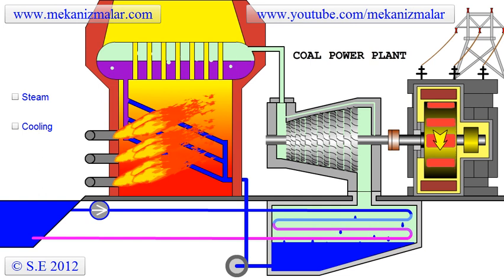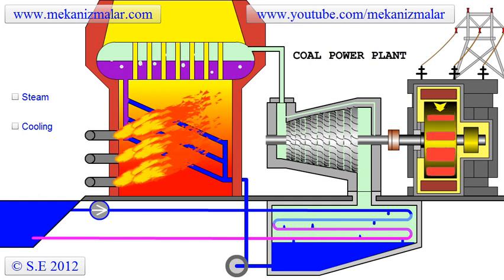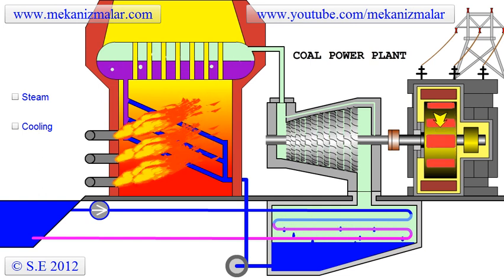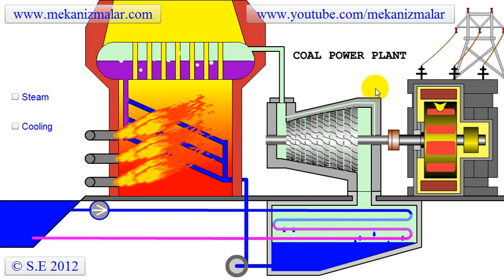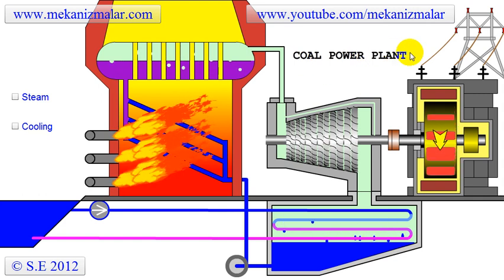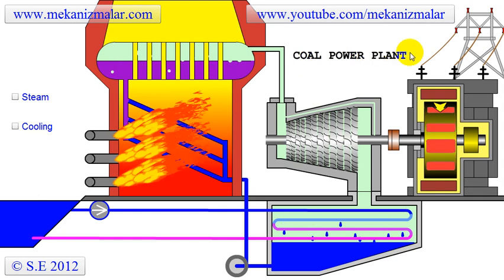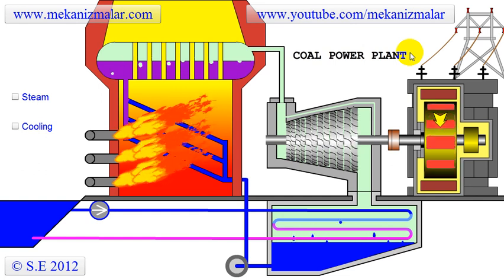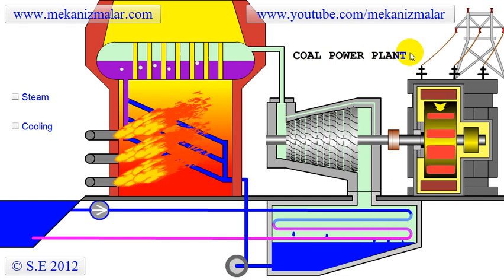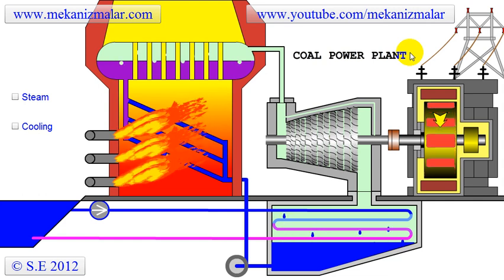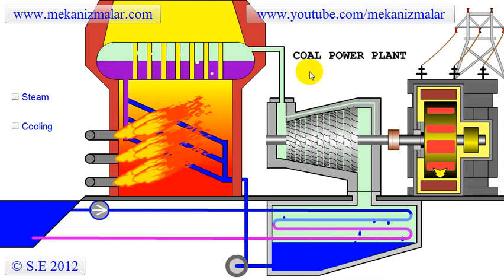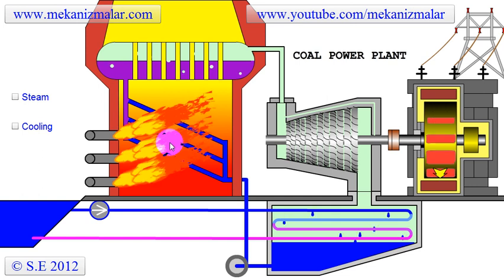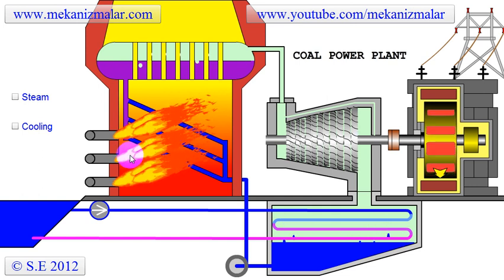Welcome to Mechanismalire.com's educational video series. Half of the world's electricity is generated by coal power plants, and there are close to 3,000 large coal power plants around the world. In this video, we're going to show you how these controversial yet indispensable power plants work — specifically, how to convert energy stored in coal to electricity.